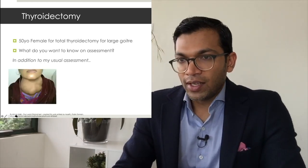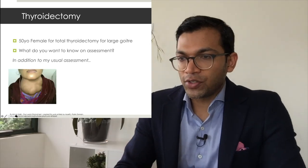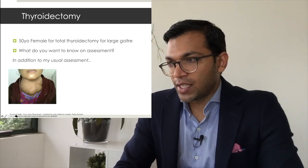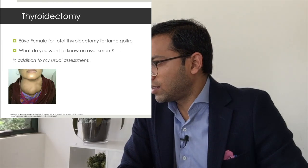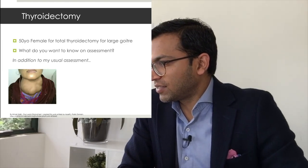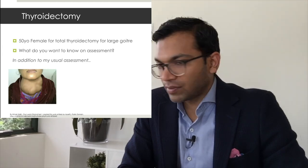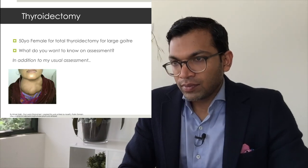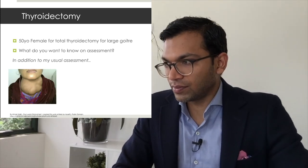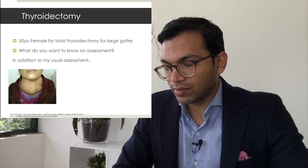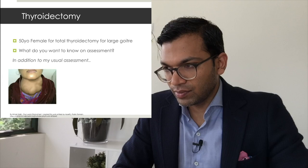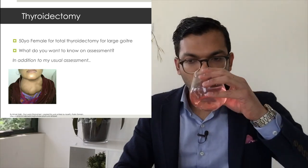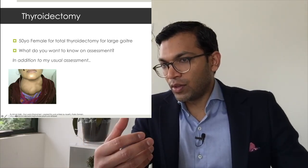Let's go through the actual cases. In addition to your usual assessment, what do you want to know about a 50-year-old female for total thyroidectomy for a large goiter? This is a 50-year-old female for thyroid surgery with a large goiter, and in addition to my usual assessment I would like to assess the critical airway issues - specifically functional. I'd like to know about current dyspnea, stridor, and any positional changes, and also review imaging to assess the current airway diameter.